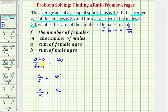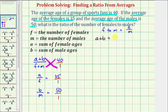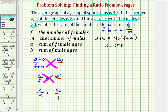And now from here, we're going to clear the fractions from each of these equations. One way to do this would be to write these averages as a fraction with the denominator of one, and then cross-multiply. So for this first equation, if we cross-multiply, we would have the quantity a plus b times one must equal 40 times the quantity f plus m. So we have a plus b must equal 40 times the quantity f plus m. Cross-multiplying the second equation, we have a equals 35f. And for our third equation, b equals 50m.